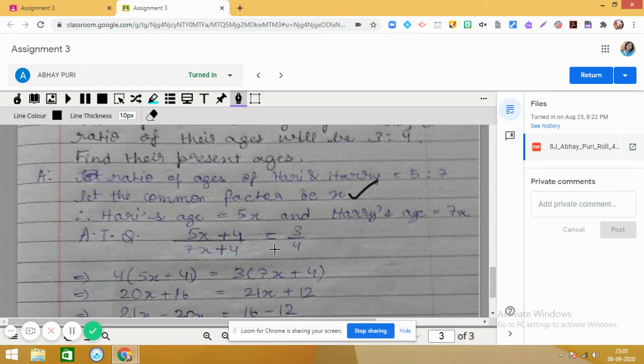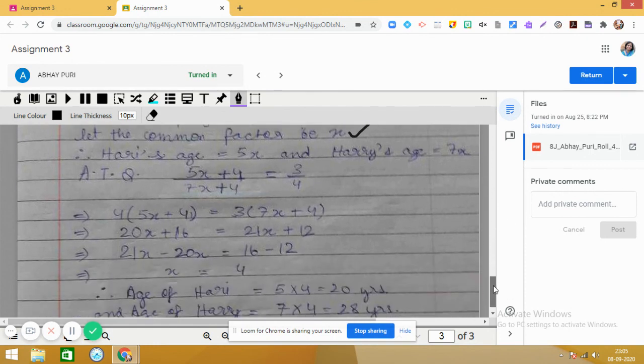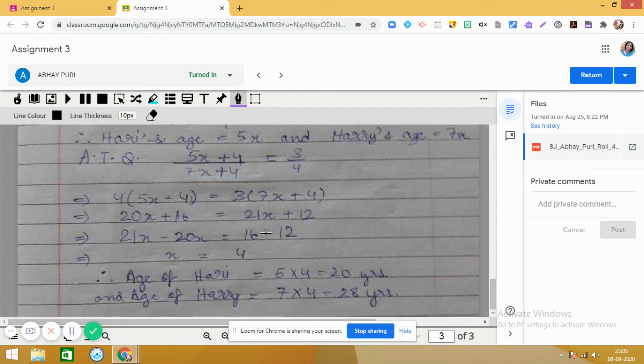4 years from now, we will be adding 4 to both the ages of Hurry and Harry, so 5x + 4 upon 7x + 4. It is given that it is in the ratio 3 is to 4, so 3/4. We simplify this by cross multiplication, we get x = 4. This is perfectly fine.